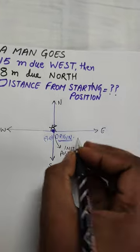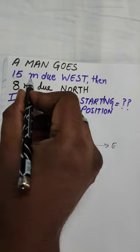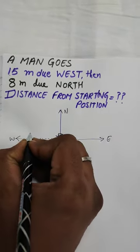Now just draw 15 meters due west. That is, the man is moving 15 meters towards minus x.